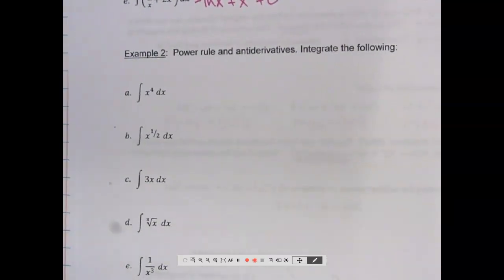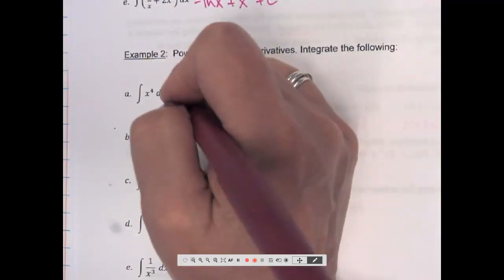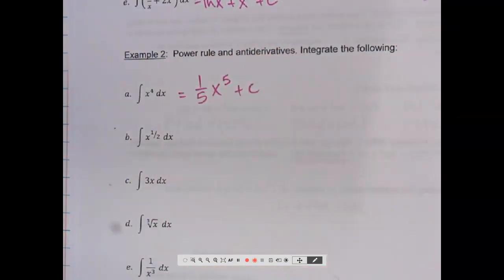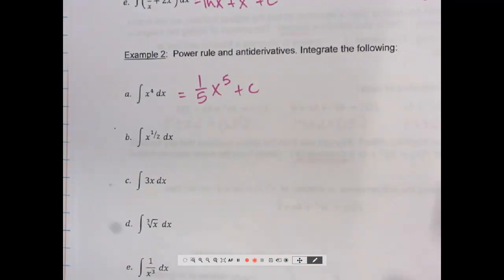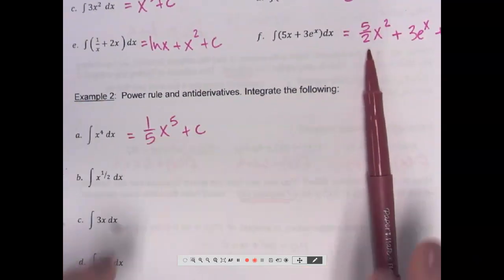What about x to the 4th? If we ended up with x to the 4th, what do we have to start with? x to the 5th. Now think about the coefficient and what happened to it. 1/5 x to the 5th. You could say x to the 5 over 5 — I just prefer having that 1/5 out front.